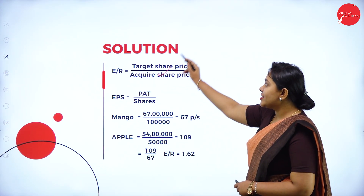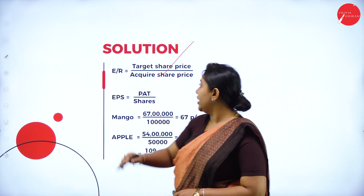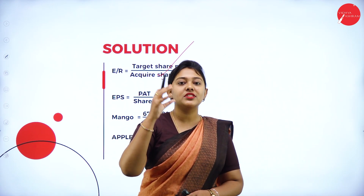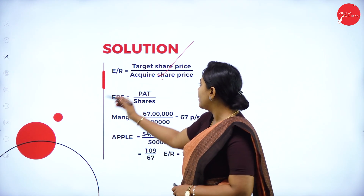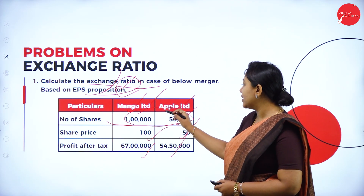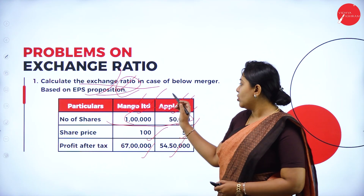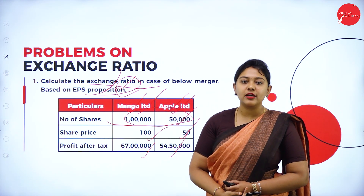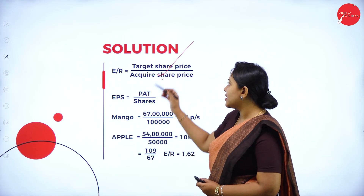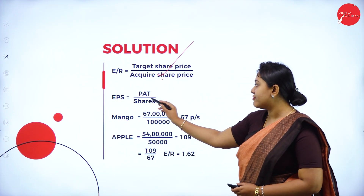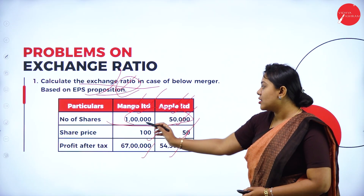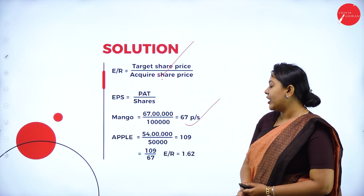The formula for exchange ratio is target share price divided by acquirer share price. The target company is Apple Limited, which will be merged with Mango Limited (the acquirer). Calculating EPS for Mango Limited: profit after tax of 67 lakh divided by 1,000 shares gives 67 per share.